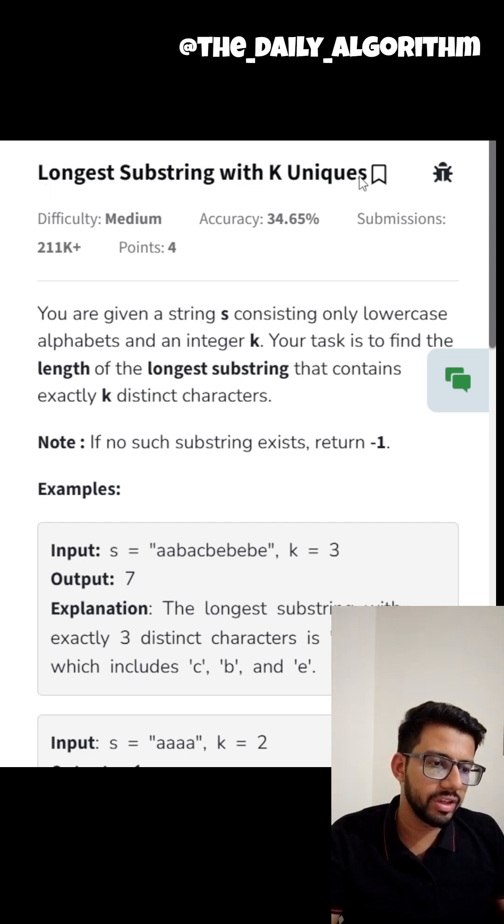Today's question is longest substring with K uniques. You are given a string S consisting only of lowercase alphabets and an integer K. Your task is to find the length of the longest substring that contains exactly K distinct characters. If no such string exists, return minus 1.